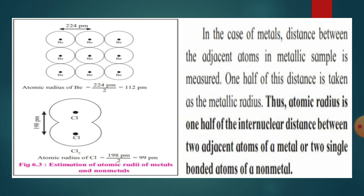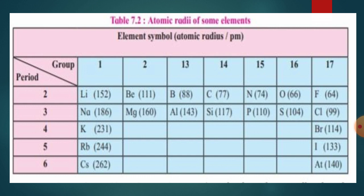Looking at the table, in the second period we have lithium, beryllium, boron, carbon, nitrogen, oxygen, and chlorine, while the third period has sodium, magnesium, aluminium, silicon, phosphorus, sulfur, and chlorine. From the table, the atomic radius of elements is decreasing across the period. Across the period the values go: lithium 152, beryllium 111, boron 88, and so on decreasing to 74, 77, 74, 66.